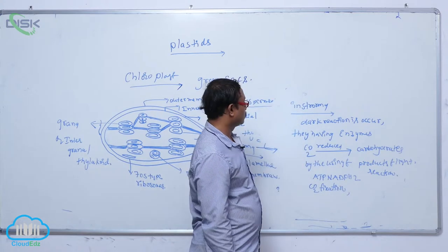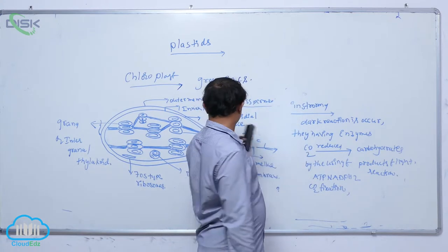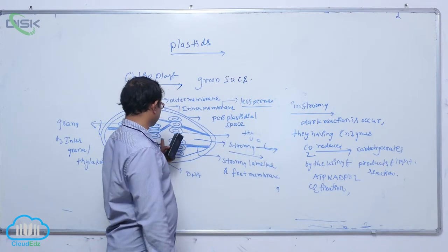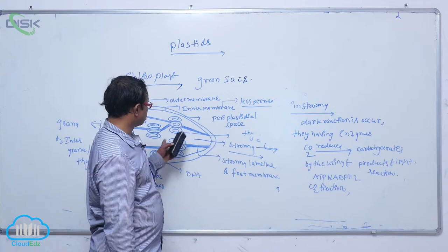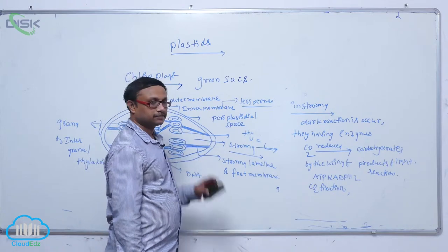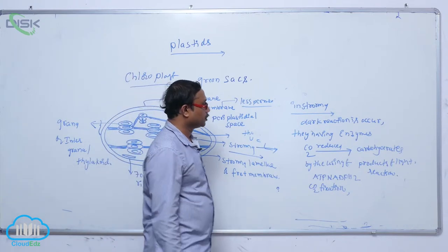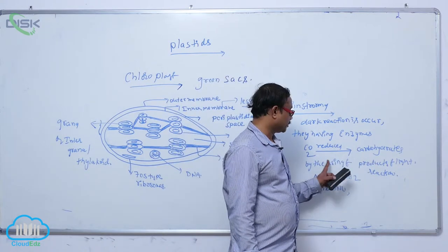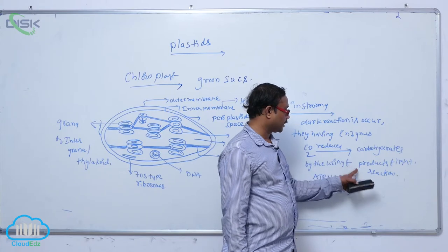It takes place in that stroma. So dark reaction occurs in the stroma. It is not dependent upon that light, but it is dependent upon the products of light. In this, carbon dioxide is reduced to carbohydrate by the using of products of light reaction.